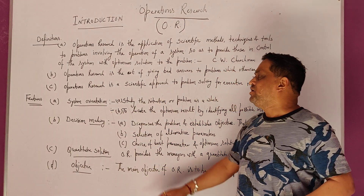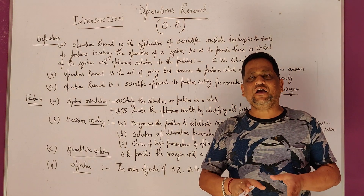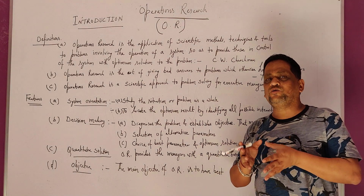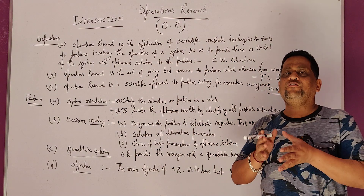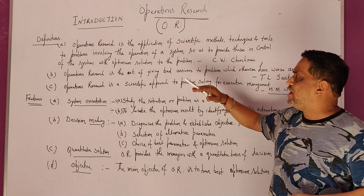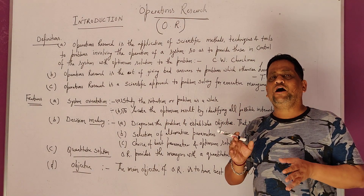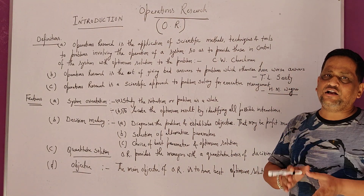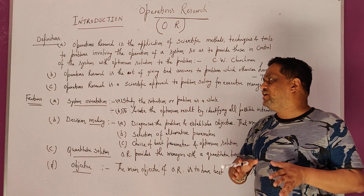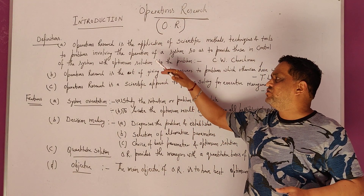The third definition: Operations Research is a scientific approach to problem solving for executive management. We have various types of problems — cost minimization objectives, profit maximization objectives — and the right decision must be taken. Various techniques available in OR help the user so that right decisions can be taken with the optimum solution, helping the executive management deal with organizational goals.